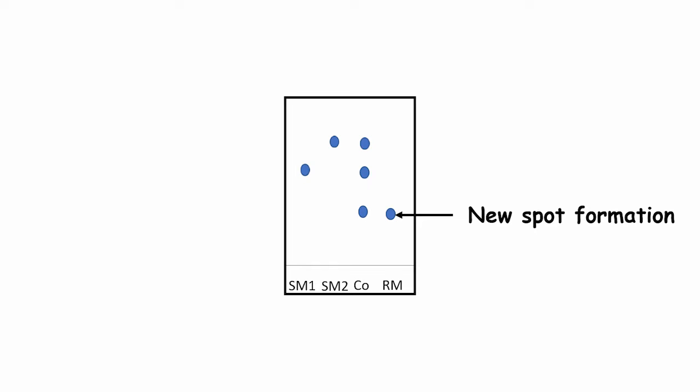If in reaction mixture, nothing can be seen at the level SM1 and SM2 that means your starting material is completely consumed and your reaction is over.